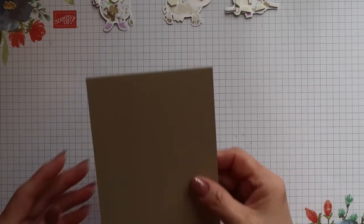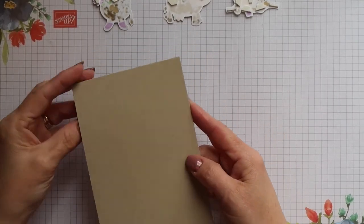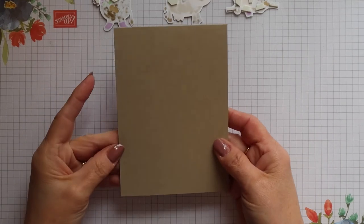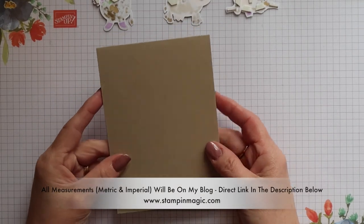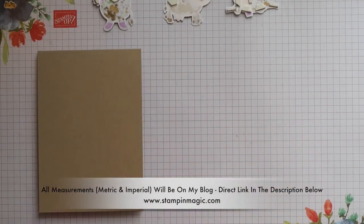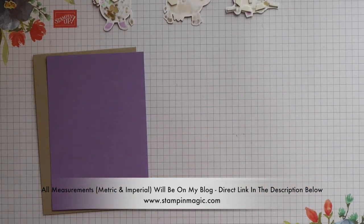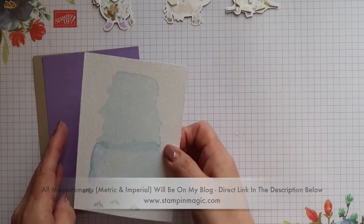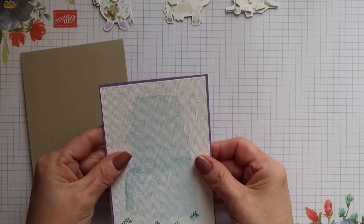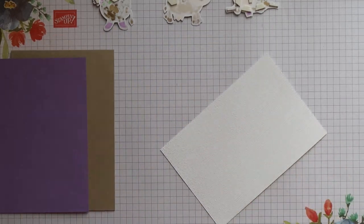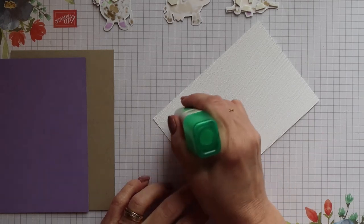Right, now I can start putting this card together. I have half a standard sheet of cardstock scored in the middle and folded to create a portrait card and this is in Crumb Cake. Then I have a Highland Heather mat and my stamped panel. So the first thing I'm going to do is layer my stamp panel onto my Highland Heather mat.